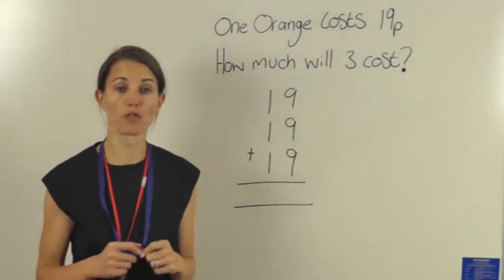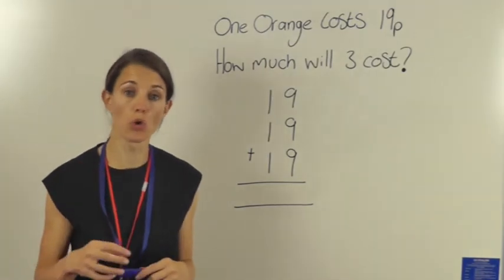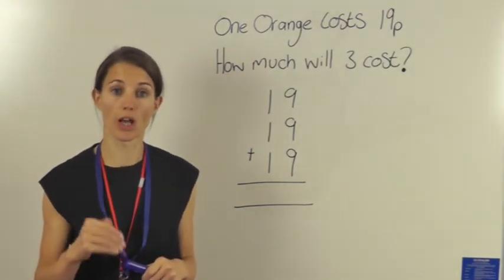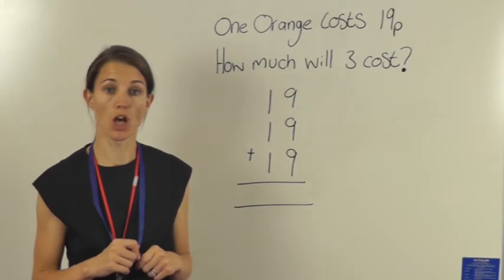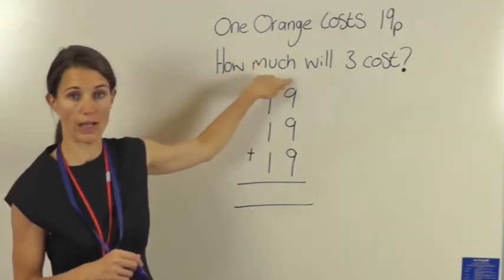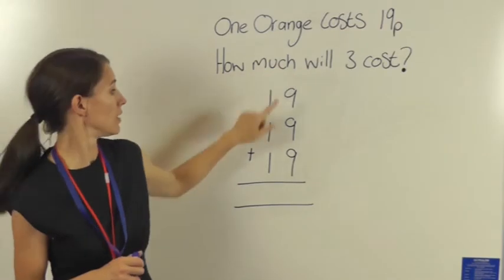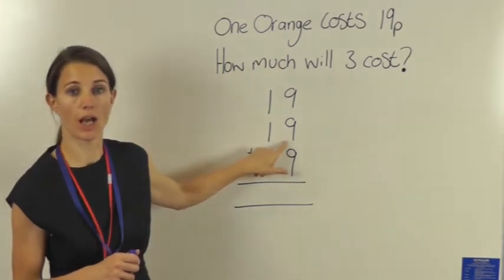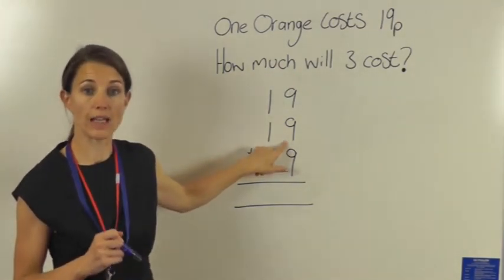Now I'm going to start on the right-hand side because we always start with addition on the right-hand side. So I'm going to start by adding the right-hand column up: nine add nine add nine, that gives me 27.